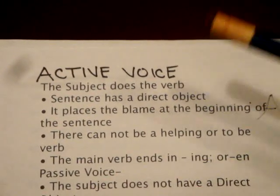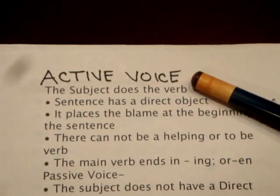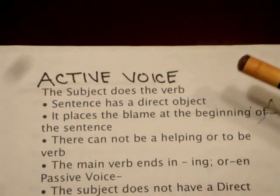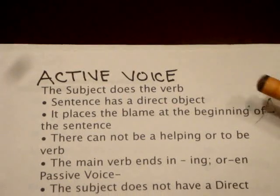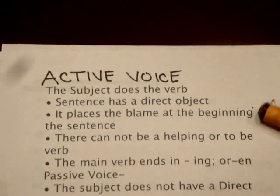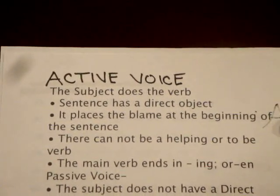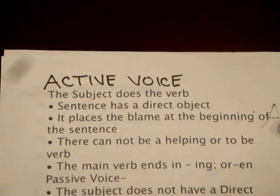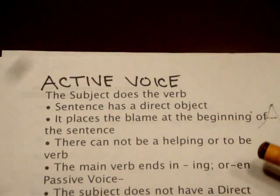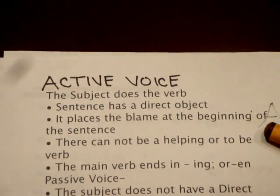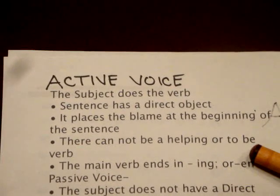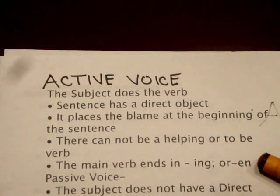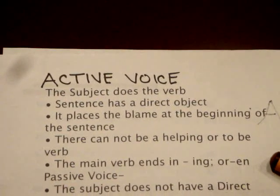Active voice: the subject does the verb. The sentence has a direct object. It places the blame at the beginning of the sentence. There cannot be a helping or 'to be' verb. The main verb ends in '-ing' or '-en'.